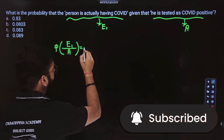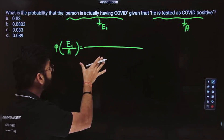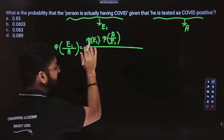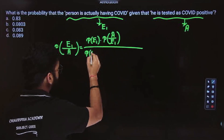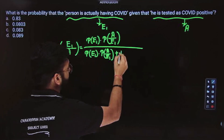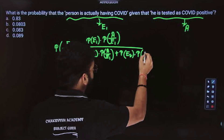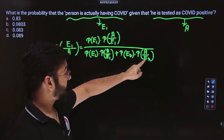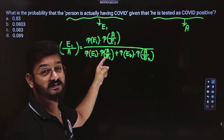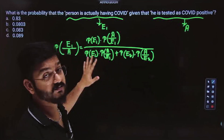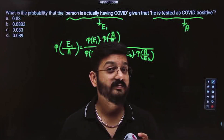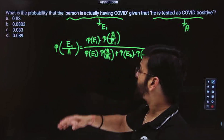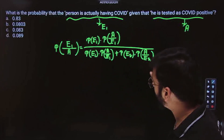So what is the expression for Bayes theorem? In the numerator it will be favorable by total. The favorable for E1 is: probability of E1 multiplied by probability of A by E1. The denominator is total: probability of E1 into A by E1, plus probability of E2 into probability of A by E2. We have found all four values — A by E1, A by E2, probability of E2, and probability of E1 is 0.1%. Substitute all the values.